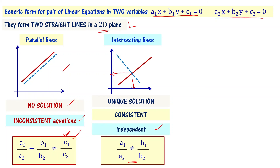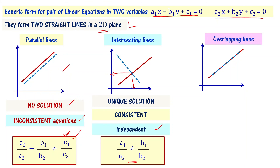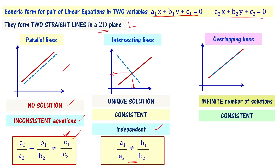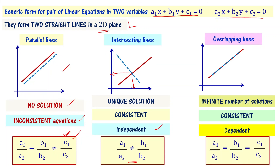The next case is overlapping lines. In this case, there are infinitely many solutions — a consistent and dependent set of linear equations. The relation is: a1/a2 = b1/b2 = c1/c2. Remember these three relations and their corresponding pictures. Without drawing the graph, just by checking the coefficient ratios, you can determine the nature of the solution.